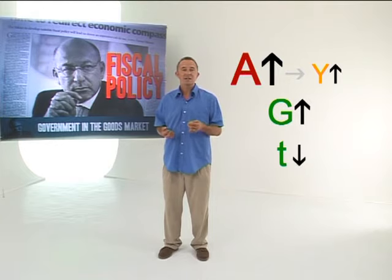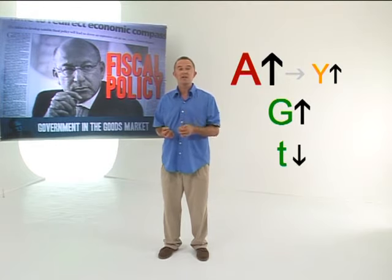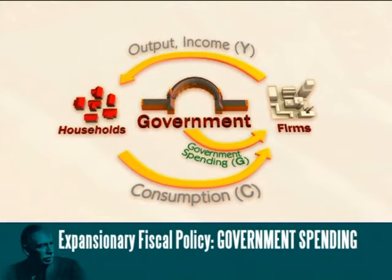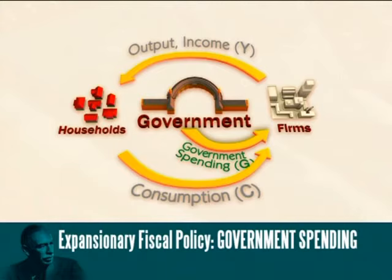First, let's consider the impact of increased government spending. An increase in government spending means that government buys more goods and services from firms in the economy — it could be bricks for building, gravel for roads, sheets for hospital beds, or any number of things. Firms respond by increasing production, and they employ more factors of production, so household income increases and they increase their consumption spending.